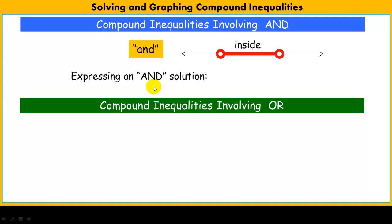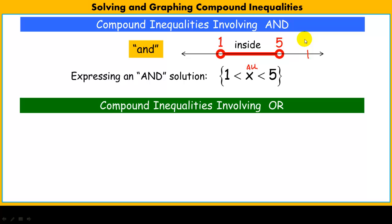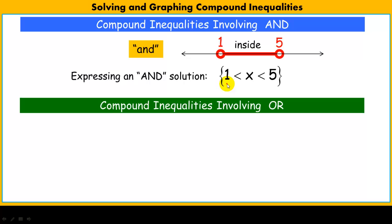The AND solution set looks something like this. I've chosen boundary points one and five. We read this as: all values of x that are greater than one and less than five — they must fall within this range. Something like nine satisfies being greater than one, but it's not less than five, so it can't satisfy this. It has to satisfy both inequalities — hence the name AND.